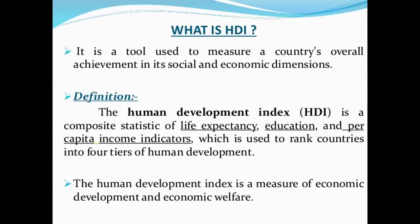What is the HDI? The Human Development Index is a tool used to measure a country's overall achievement. It accounts for dimensions such as economic development. The definition: the Human Development Index is a composite statistic of life expectancy, education, and per capita income, used to rank countries into four tiers of human development.